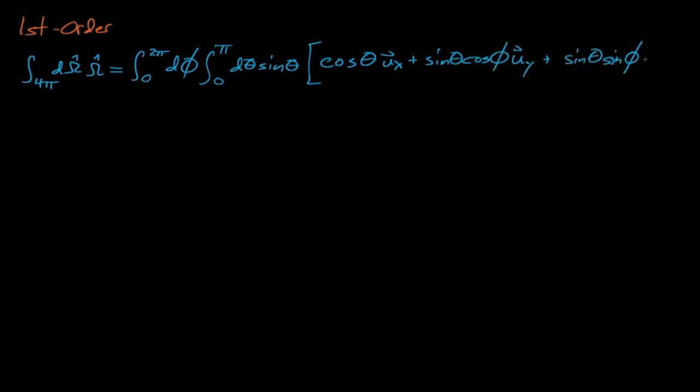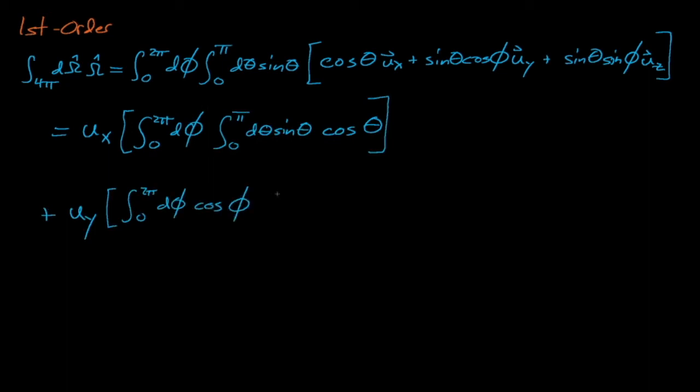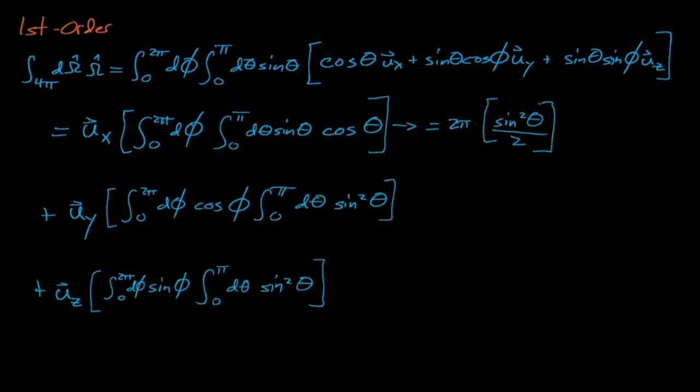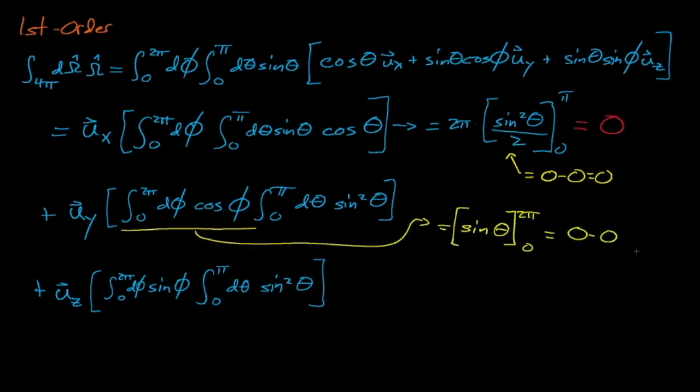Integrating some function times omega is more difficult. Omega is a vector, and thus when we evaluate this integral, we must evaluate it for its x component, y component, and z component. After the dust settles, we see that doing this causes each component to integrate out to 0, and thus the integral of omega d omega over all 4 pi equals 0.